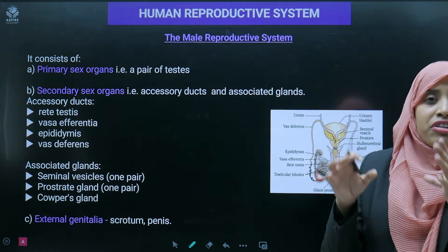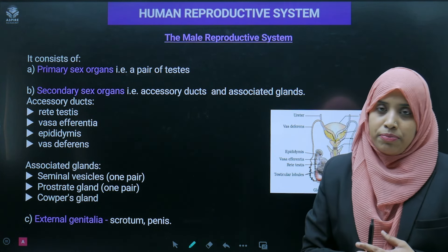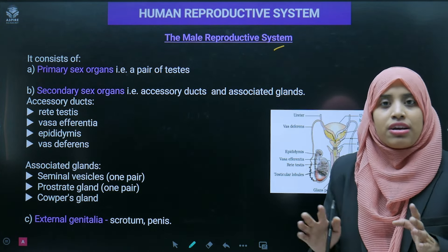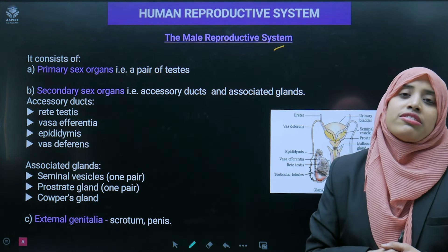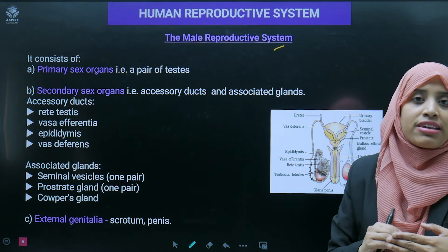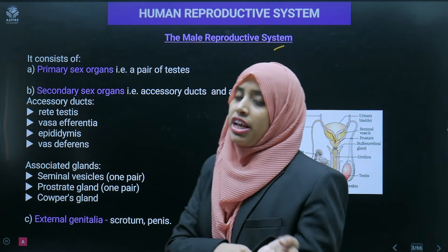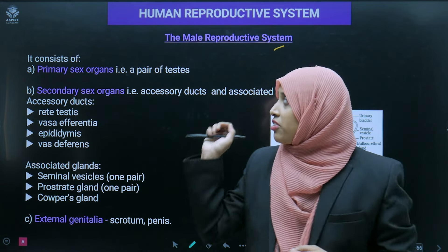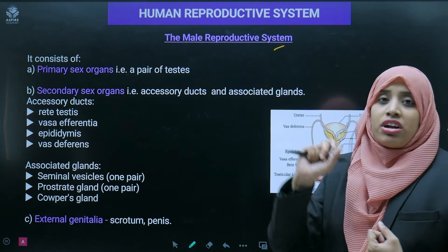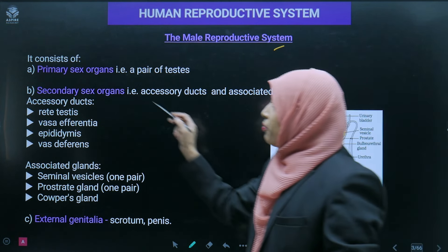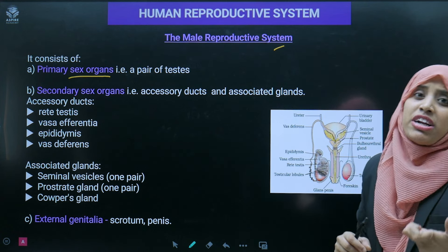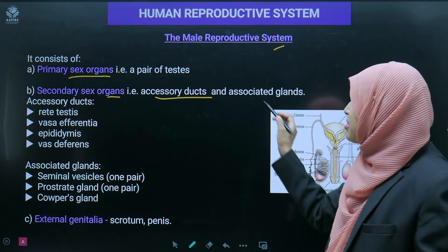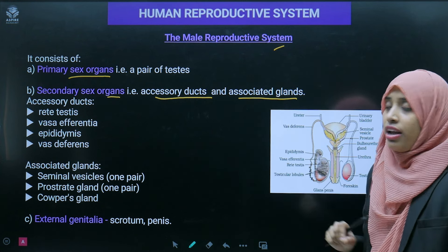Now we will start the chapter. Since humans are sexually reproducing organisms, we need to understand the reproductive system. The male reproductive system primarily consists of a primary sex organ — a pair of testes — whose job is to produce gametes. It also has secondary sex organs including accessory ducts and associated glands.